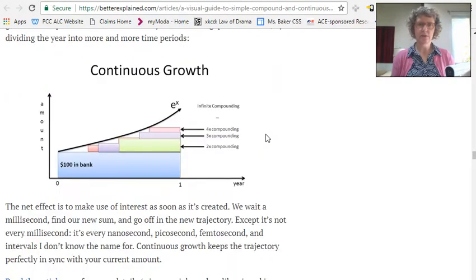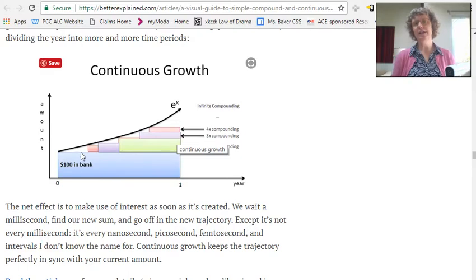Here we are, continuous growth. So if we went up faster and faster and faster, see how there's these little gaps? I think that's what they were talking about. These gaps essentially will go away, because you're now compounding at every single moment. And if you compound more and more and more often, it will approach this curve, which is called the exponential function.